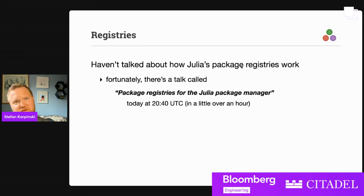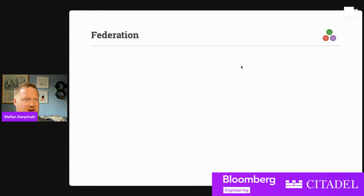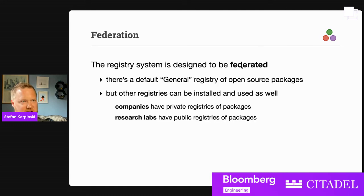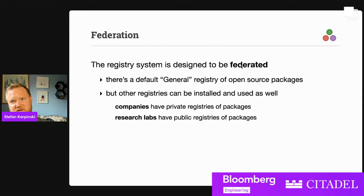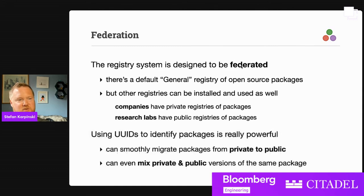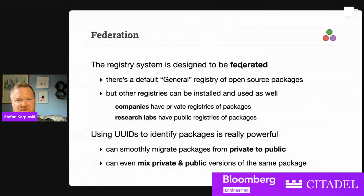I haven't talked about how Julia's package registries work, but there's a talk about it tomorrow. Julia's package system is federated — there's a general registry of open packages, but other registries can be installed and used. Companies often have private registries of packages internally, and research labs often have their own public registries of just their research code. UUIDs are really helpful here — they allow you to smoothly migrate packages from private to public, and you can even mix private and public versions of the same package that are in different registries, and it just works.